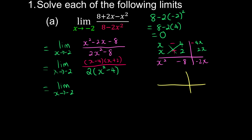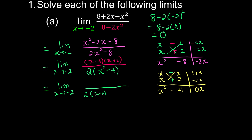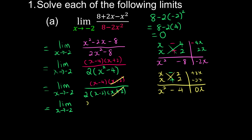We can further factorize x squared minus 4 since it's a perfect square difference. So x times x is x squared, 2 and 2 gives 4, and to get 0x when crossed, one must be negative and one positive. This gives us (x minus 2)(x plus 2). The numerator we copy back, and we can see that x plus 2 cancels from both numerator and denominator.